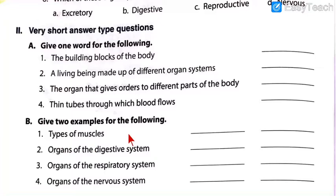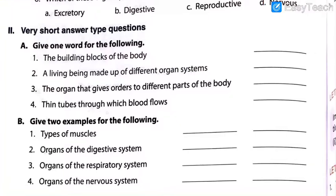That means give one word answer and give two examples for the following. These are not only easy but very short also. If you have the textbook you can write directly there; if not, write in your rough book because you will need the answers, and once you get them you will be able to copy them into your fair book. So let's get started — I hope you all are ready. You will now write the answers.